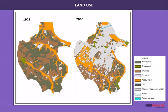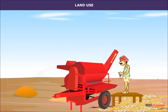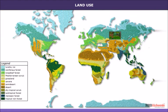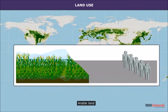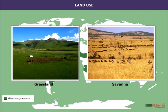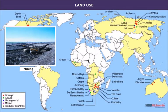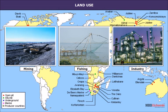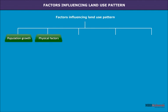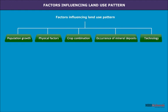For example, land use cannot be explained simply by the economic use of the land like agriculture, housing and roads. Major land use patterns of the world are forests, arable land, pasture land or grasslands, savannah, mining, fishing and industrial centers. Factors influencing land use patterns include population growth, physical factors, crop combination, occurrence of mineral deposits, and technology.